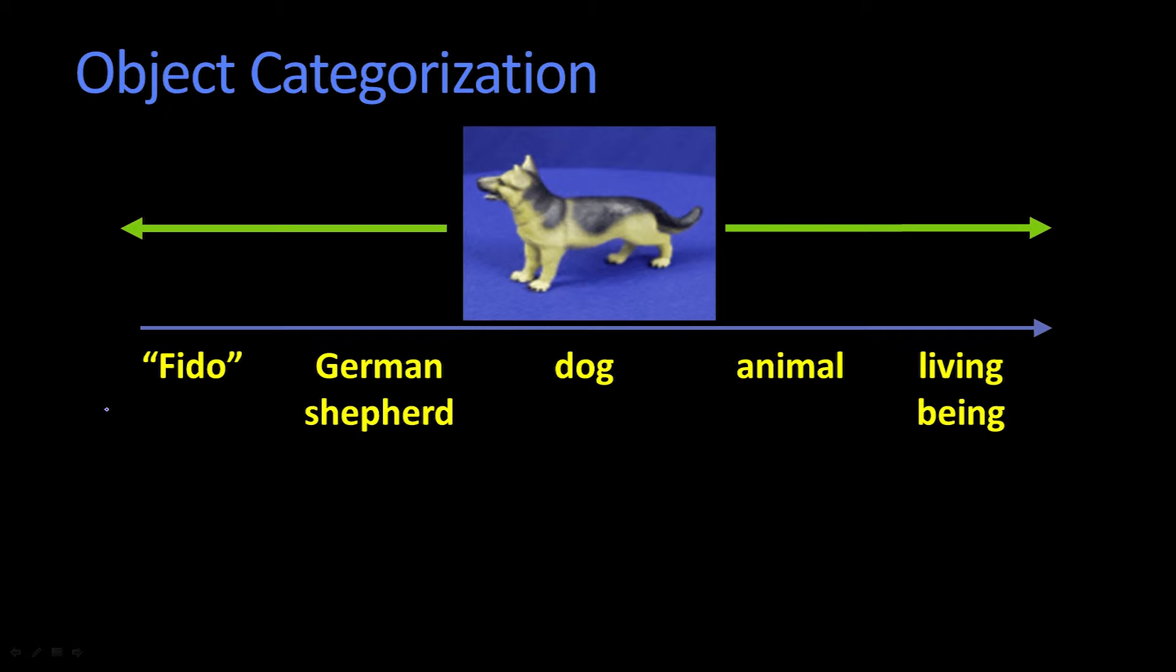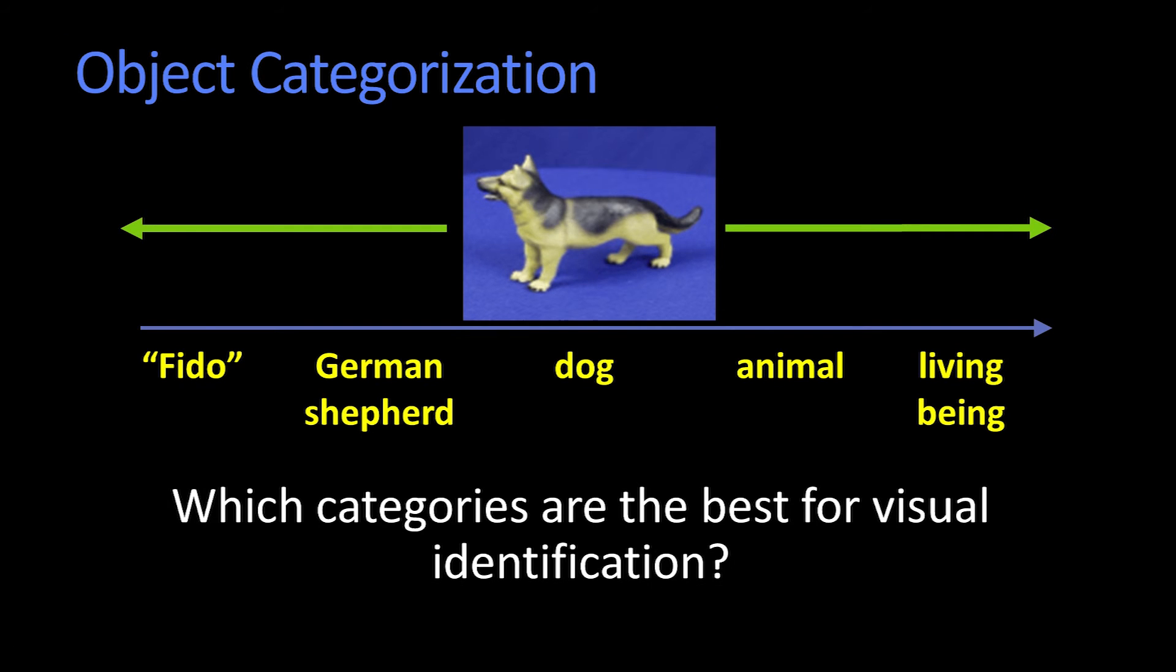So you can say, well, this is Fido, or you could say this is a German Shepherd. You could say this is a dog. You could say it's a mammal. You could say it's an animal. You could say it's a living thing, although living being is probably, I don't know, but it is these things, right?